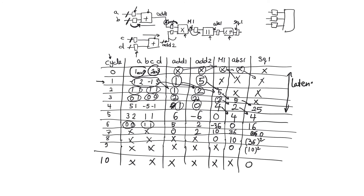This is called latency. Latency can be defined as the number of clock cycles that go between a specific input being provided to the circuit and the specific output corresponding to that input being available at the output. After we have filled the pipeline — after the latency — we will get a meaningful output every clock cycle. This is called throughput. In the next video, we will understand that the main value of using registers in synchronous pipelines is that it increases the throughput of the circuit.